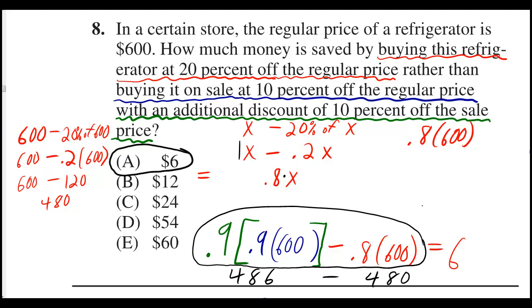And you might wonder, how come it didn't work out to be the same, because shouldn't 10% plus 10% be equal to 20%? Well, the second time you were doing a 10% discount, it was of a smaller price, so you weren't getting as much of a discount.